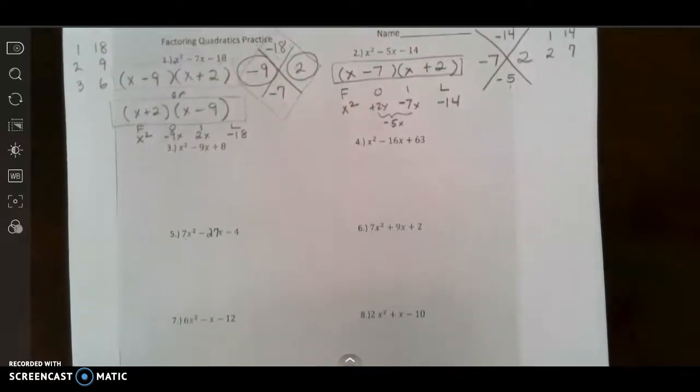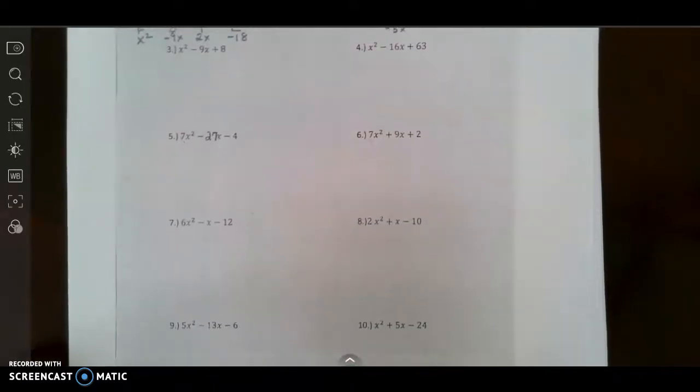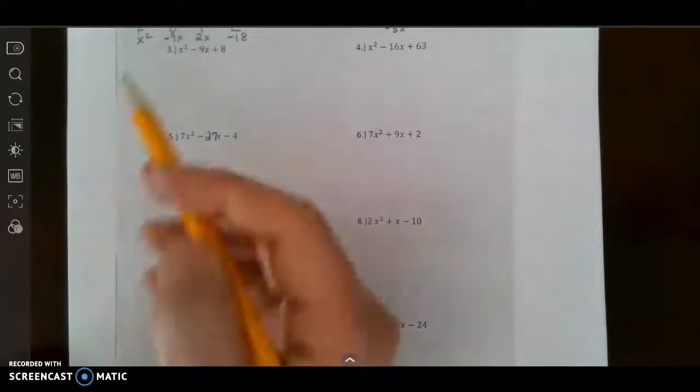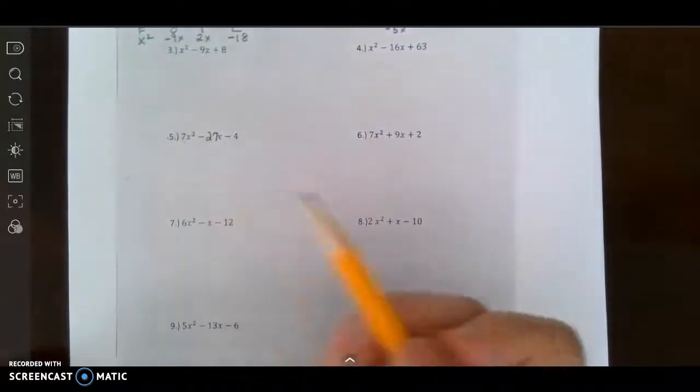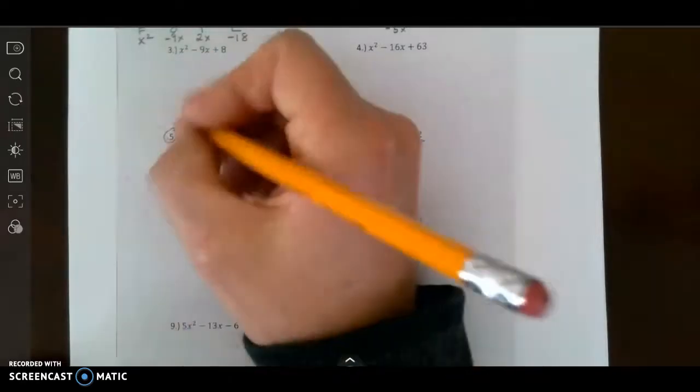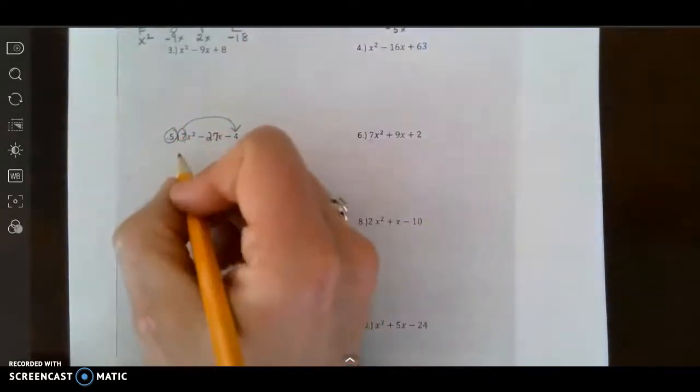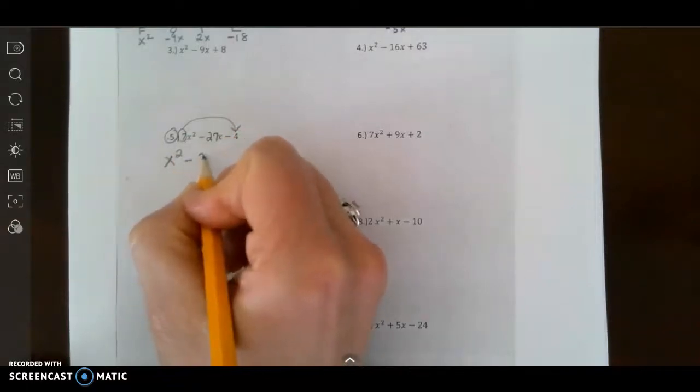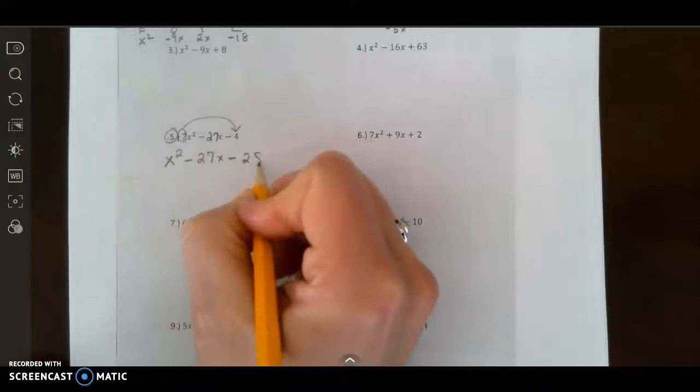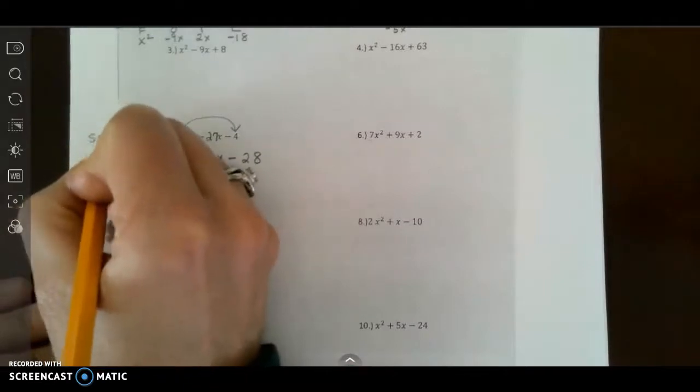Now let's come down here and let's do one where we would need slide and divide. We need slide and divide when our leading coefficient is something other than 1. For instance let's look at number 5. So we did 1 and 2 and let's go ahead and do number 5. In slide and divide when your leading coefficient is not 1 the first step is to slide divide. So we get a new quadratic x squared minus 27x minus 28 because 7 times 4 is negative 28. So the first step in slide and divide was to slide. I did the slide. I'm going to kind of keep track here.